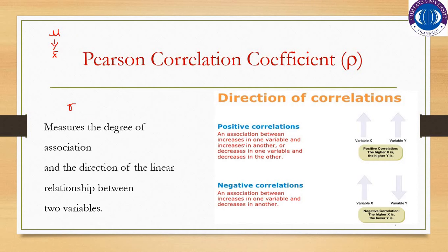Direction of correlations: positive correlation exists when there is an association between increases in one variable and increases in the other, or decreases in one variable and decreases in the other — that is, if x is increasing, y is also increasing, and if x is decreasing, y will also decrease. Negative correlation is an association between increases in one variable and decreases in the other.